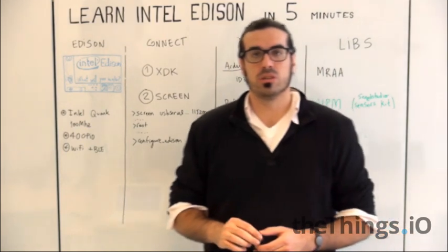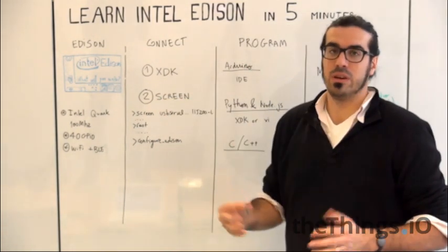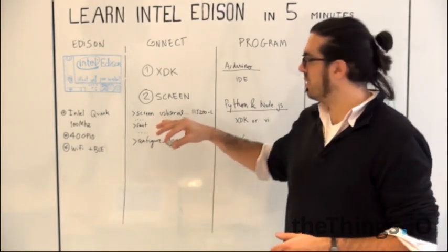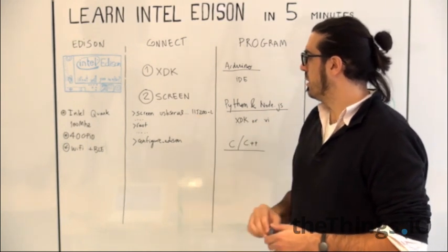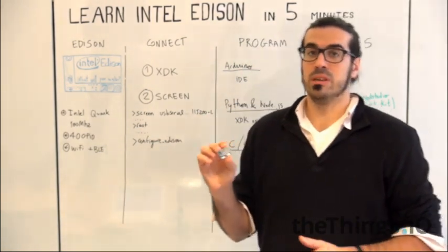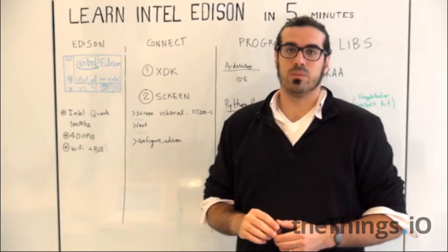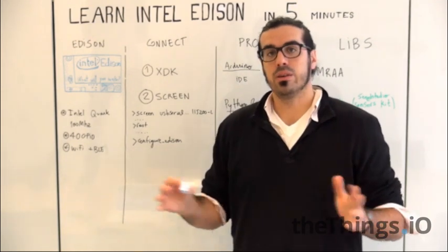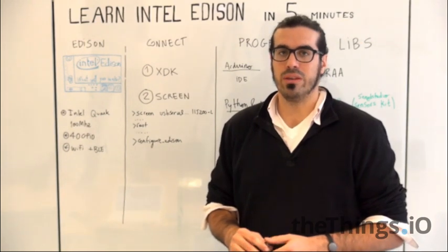The second option, which is the one I chose, is the screen method. On a Mac, you type 'screen' followed by the USB serial device path and the baud rate 115200 to get access to the Linux image running on the Edison. The default user on a brand new Edison is root, and then you can configure it: change the username, set a password, and connect it to Wi-Fi. It usually works pretty well.